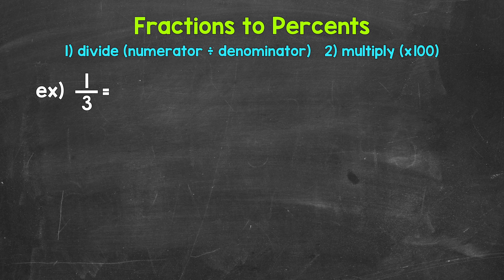So we need to start by converting this to a decimal by dividing. So for one third, we can set this up as 1 divided by 3.